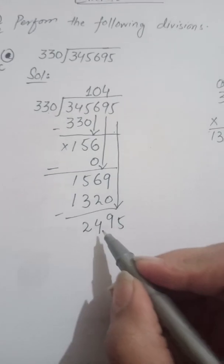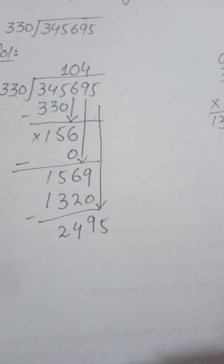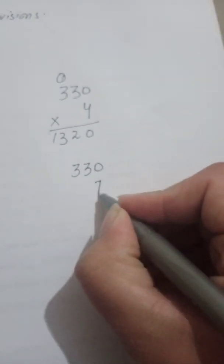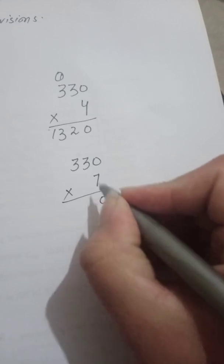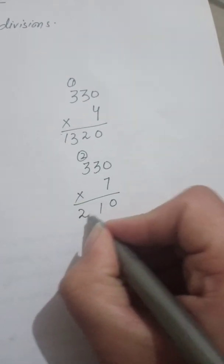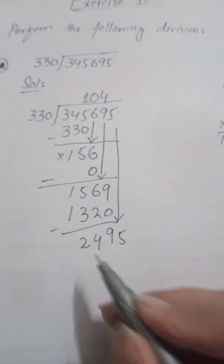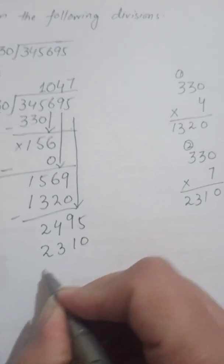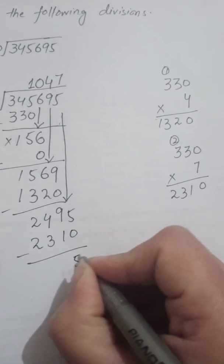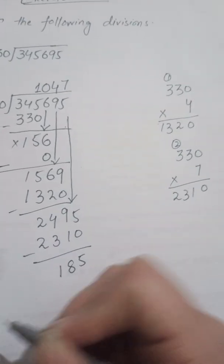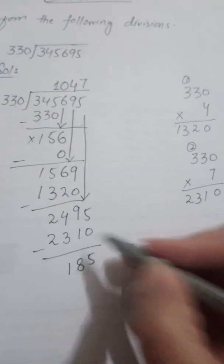Now the number is 2,495. I will multiply 330 to find the nearest number. If I multiply 7 times: 7×0=0, 7×3=21 carry 2, 7×3=21 plus 2 is 23. So 330×7=2,310. That is the nearest number to 2,495. I write 7 in the quotient. Product is 2,310. Subtract: 5 minus 0 is 5, 9 minus 1 is 8, 4 minus 3 is 1, 2 minus 2 is 0. Now bring down the next digit — there is no next digit, so we stop here.